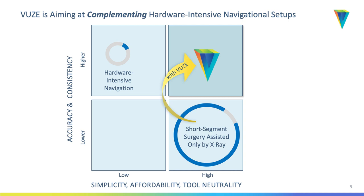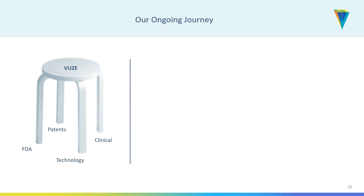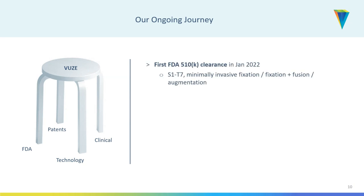Our market positioning: we're not competing with the million-to-million-and-a-half-dollar hardware-intensive navigation CT and robot for large inpatient surgeries. We are aiming for the 70–80% of the market currently done manually under x-ray. We want to increase accuracy and consistency while preserving the current simplicity of x-ray, affordability, and tool neutrality — all controlled by software. Our journey is like building a chair with four legs: technology, clinical data, intellectual property, and regulatory. We have FDA clearance, received in January — S1 through T7 stabilizations, fixation, and augmentation.